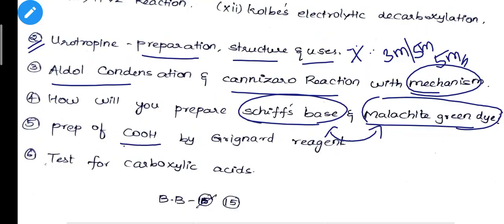Next: preparation of carboxylic acid by Grignard reagent — that is important sometimes. Next: test for carboxylic acid — this is very important. We will try to learn conversions.